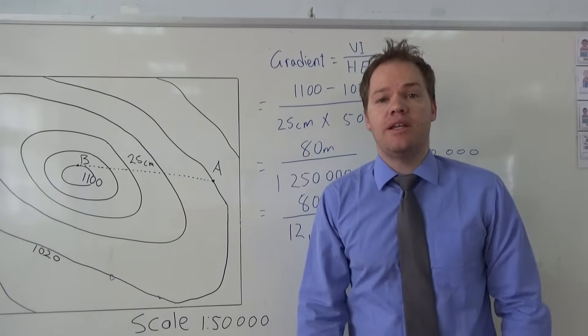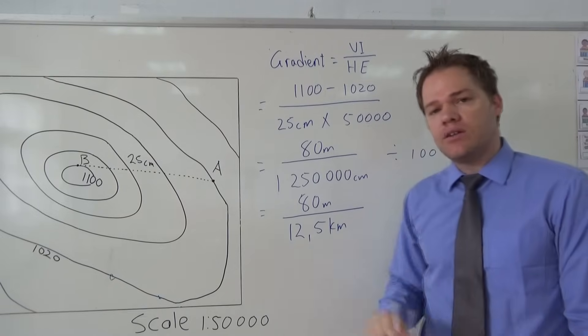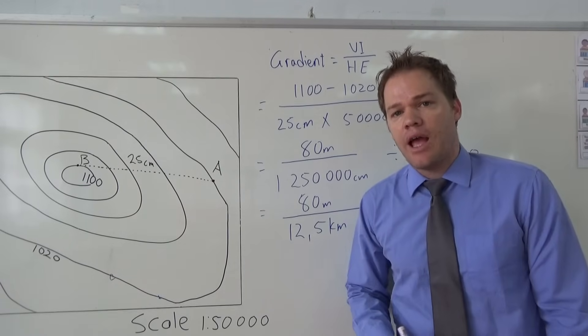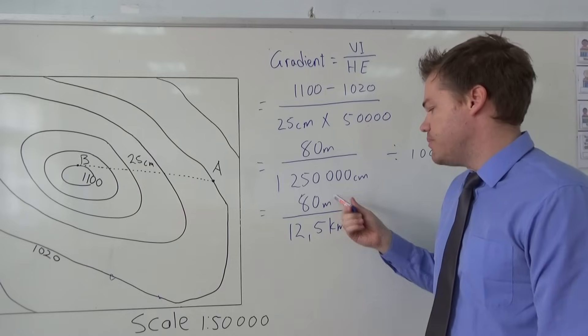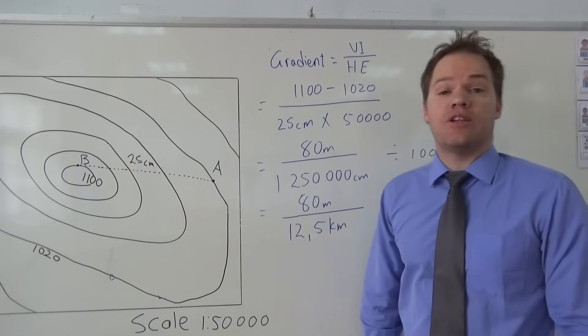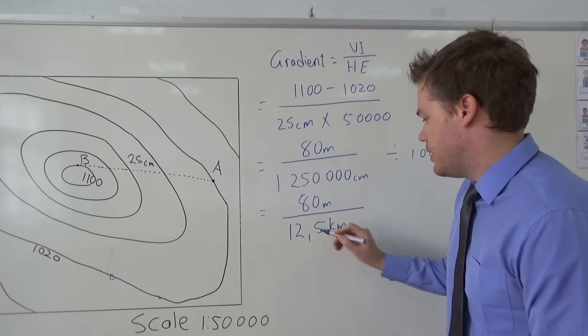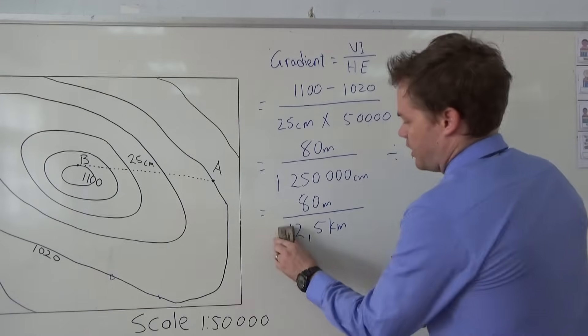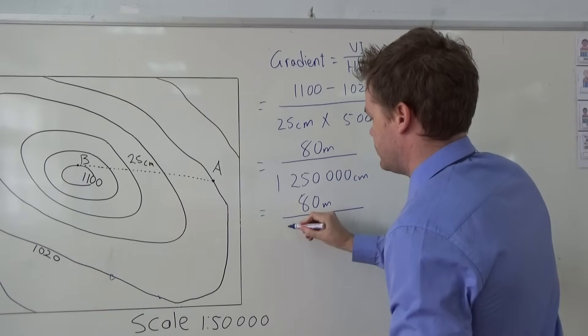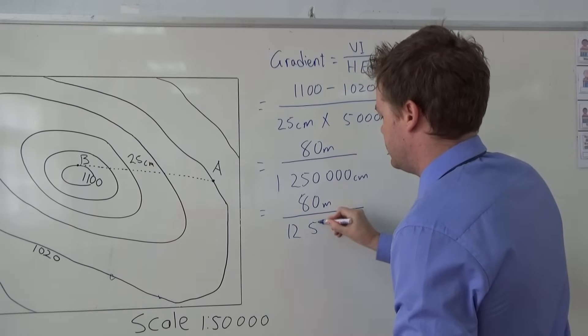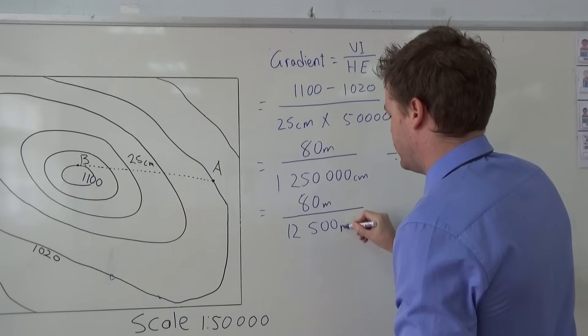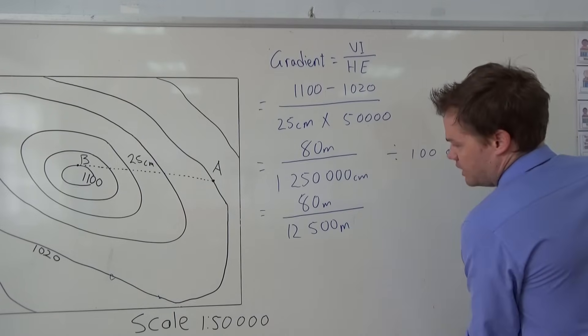kilometers. Now obviously, we are going to write the final answer as a ratio, and that is why we can't compare meters with kilometers. And that is why we are going to convert this to meters. So this would give you—I don't have enough space to write everything out—but this is 12,500 meters.